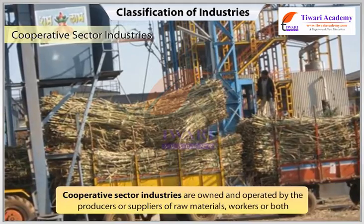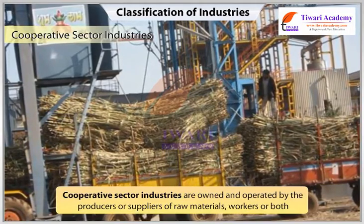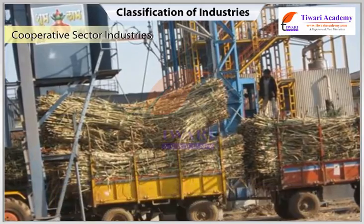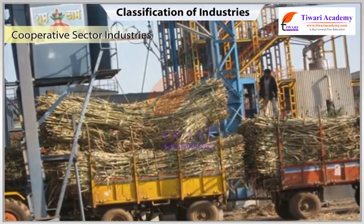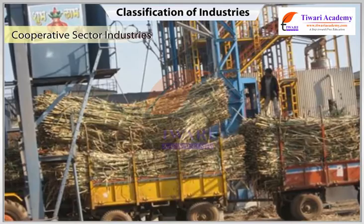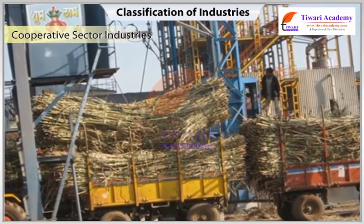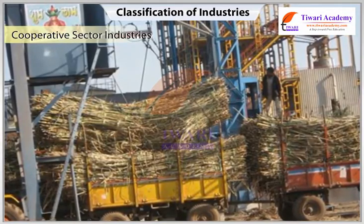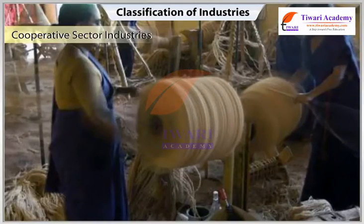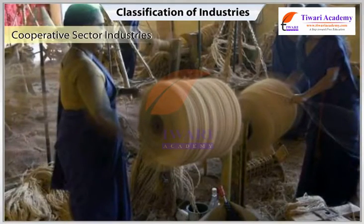Cooperative sector industries are owned and operated by the producers or suppliers of raw materials, workers, or both. They pool in the resources and share the profits or losses proportionately — such as the sugar industry in Maharashtra and the coir industry in Kerala.